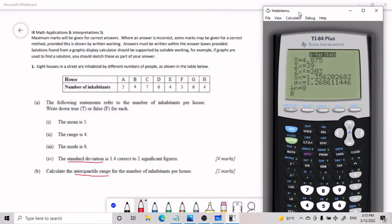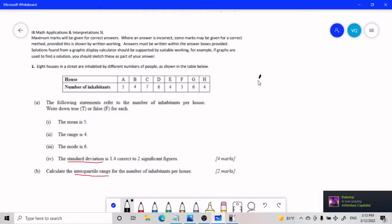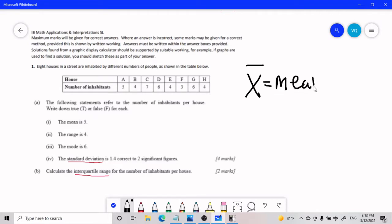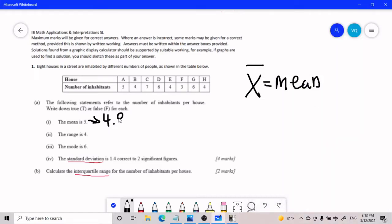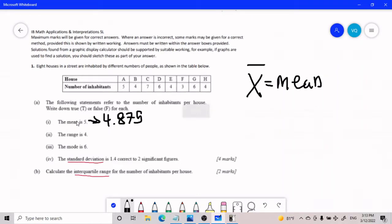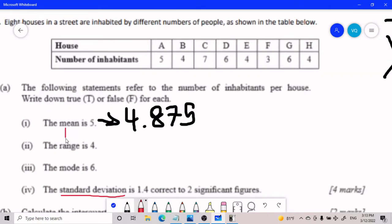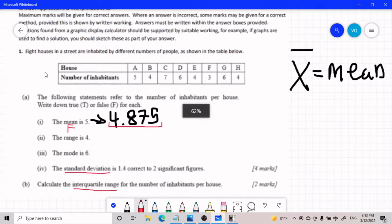And so this menu, you have to understand what it's saying. And so this symbol here, one of the things you just kind of have to memorize is actually the mean. And so the mean, according to our calculator, is 4.875. And so the mean is 5, is this true or false? This is clearly false because the number that we got was different. It's close, but it's still different. So it counts as false.